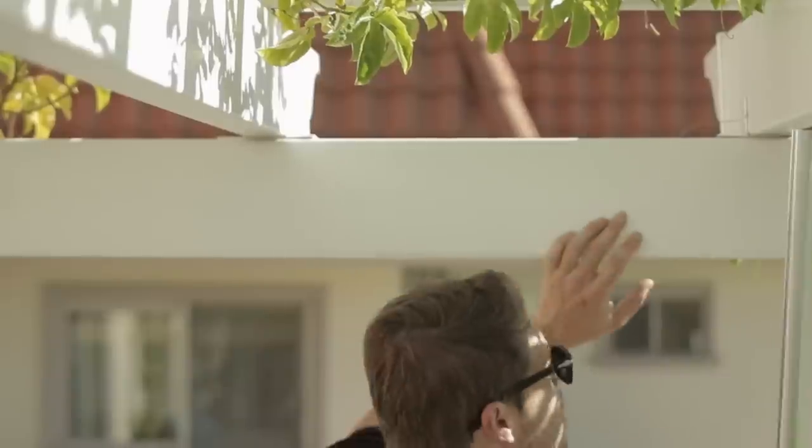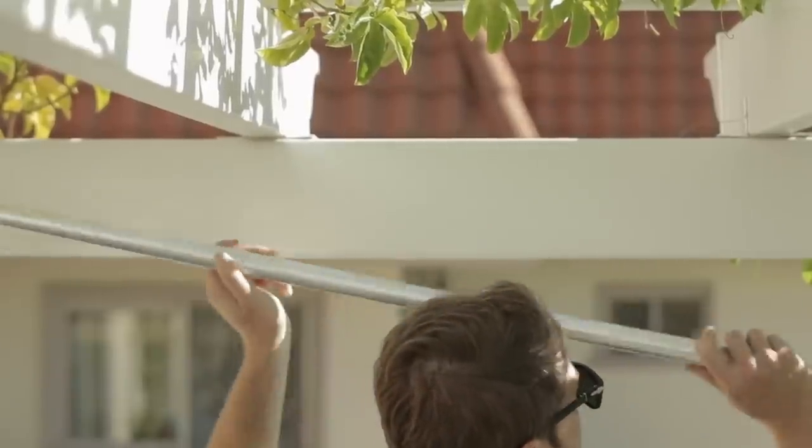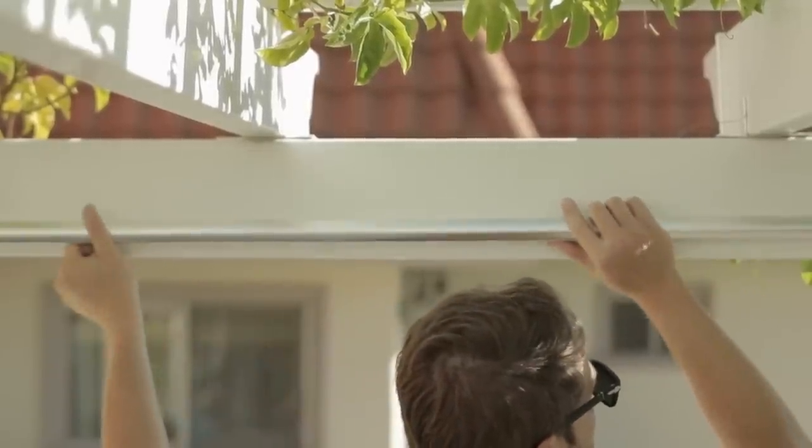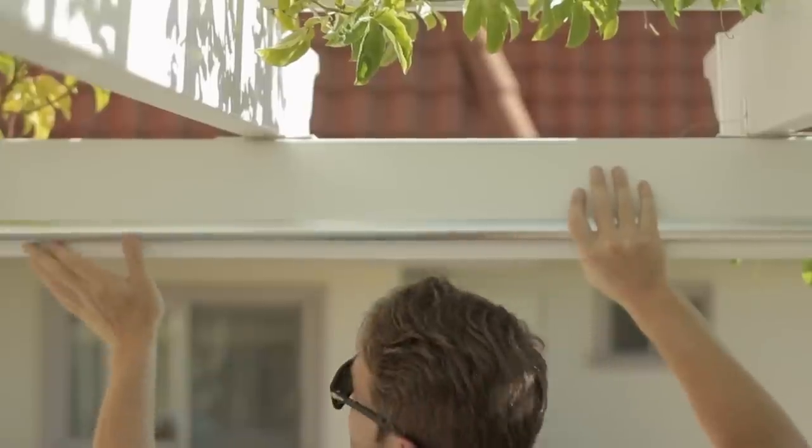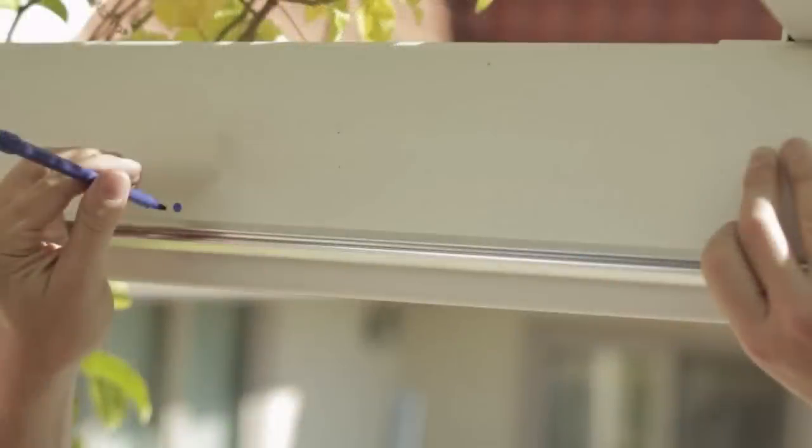To determine the best location for cable attachments, hold one of the supplied profiles against the structure at the desired height, then center and level it. Mark the desired location of cable attachments on the structure, and make sure it is within 1 to 16 inches from each of the profiles.